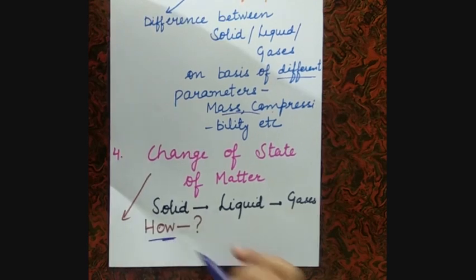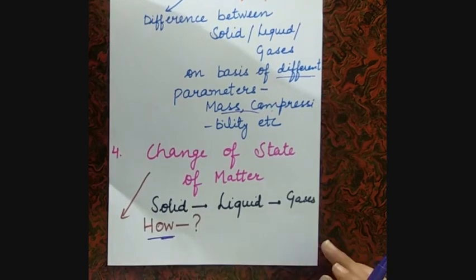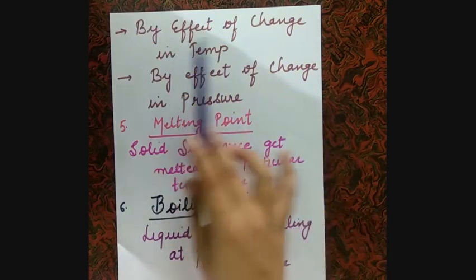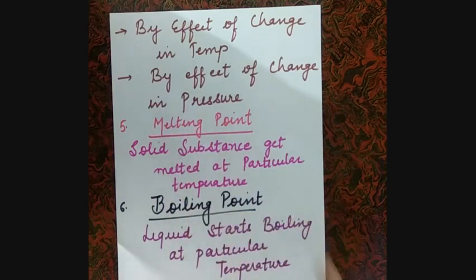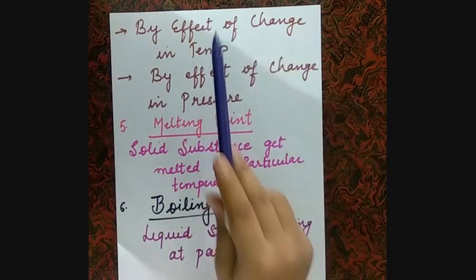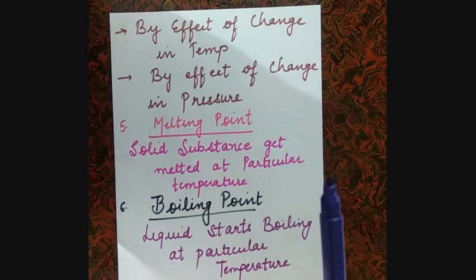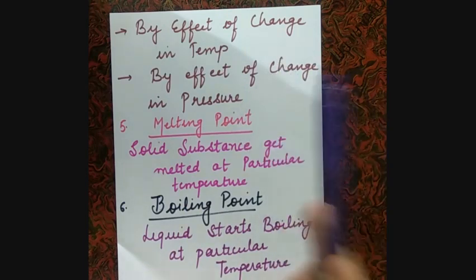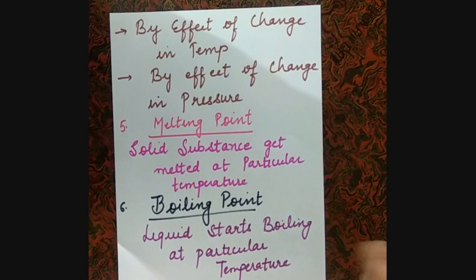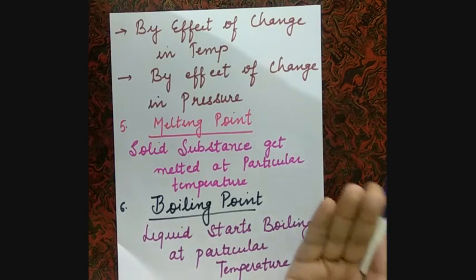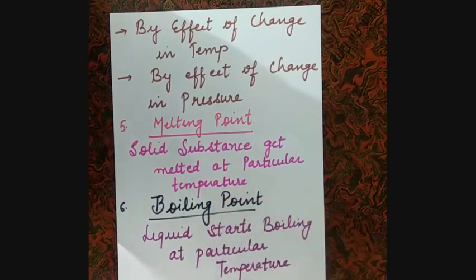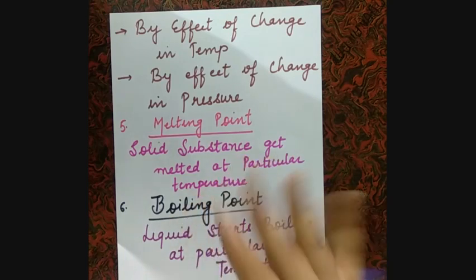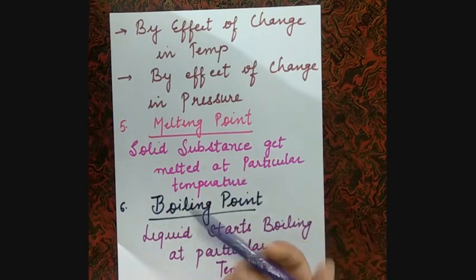Change of state happens by the effect of change in temperature and change in pressure. If you increase the temperature, solid changes to liquid, and further it converts to gas. Similarly for pressure — the higher the pressure, the higher the compressibility. Compressibility is highest in gases because their molecules are far away from each other.